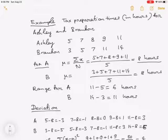For Brandon, the mean mu is 3 plus 5 plus 7 plus 11 plus 14 divided by 5, again 8 hours. So the two accountants spend the same mean amount of time in tax preparation. However, Brandon's preparation time varies more than Ashley's.